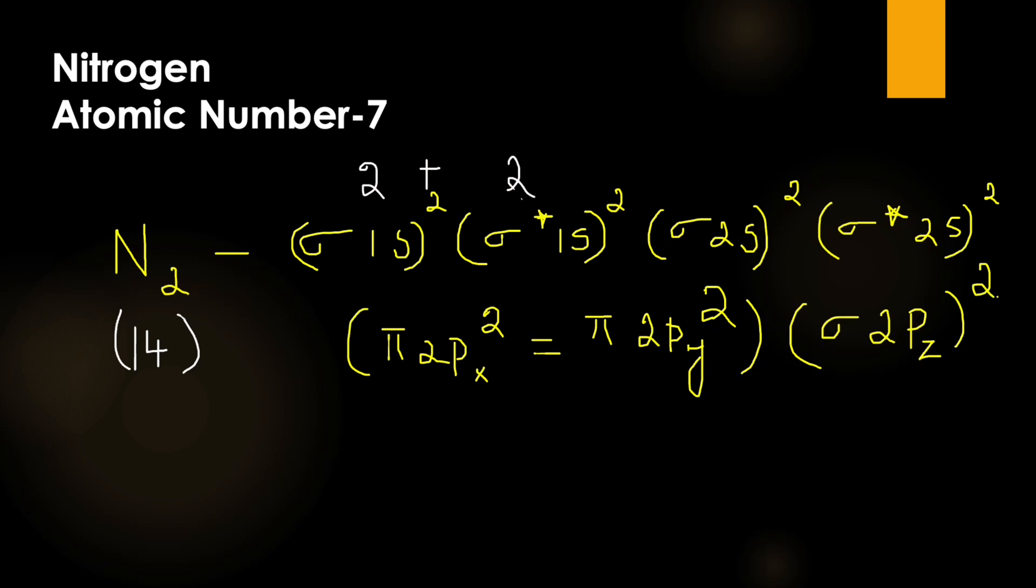So if you count the total number of electrons, 2 plus 2, then 2 plus 2, 4, 2. So if we count all together, we will get 14 electrons.